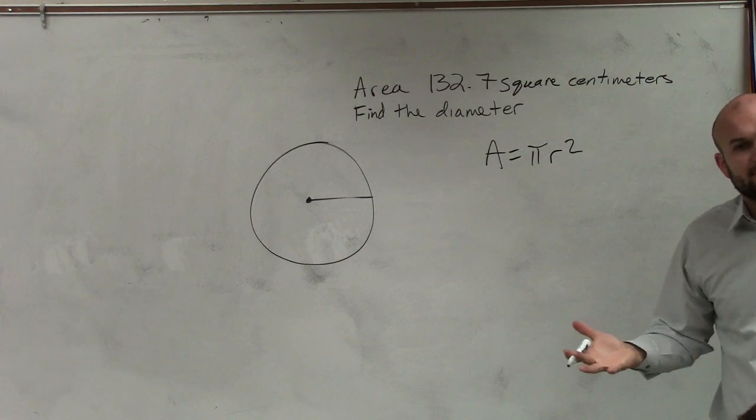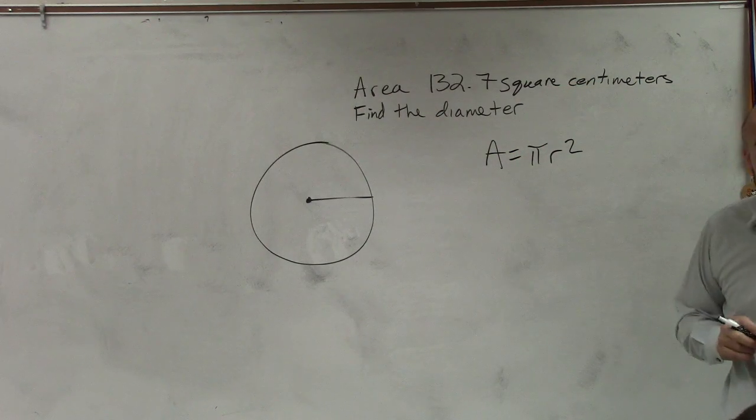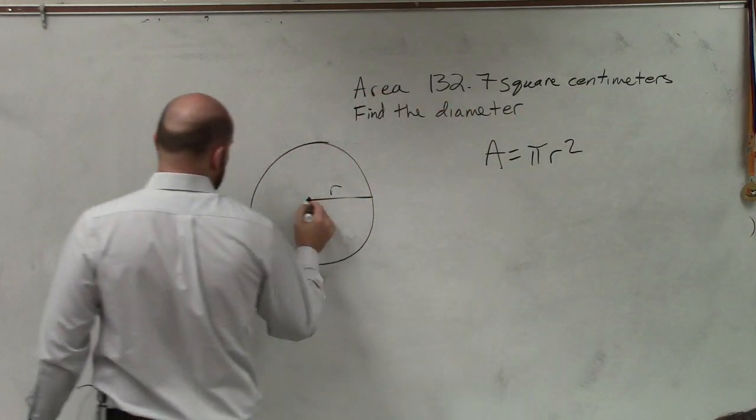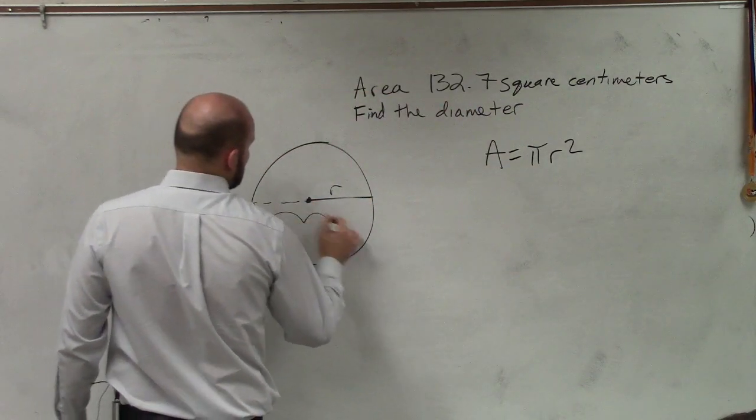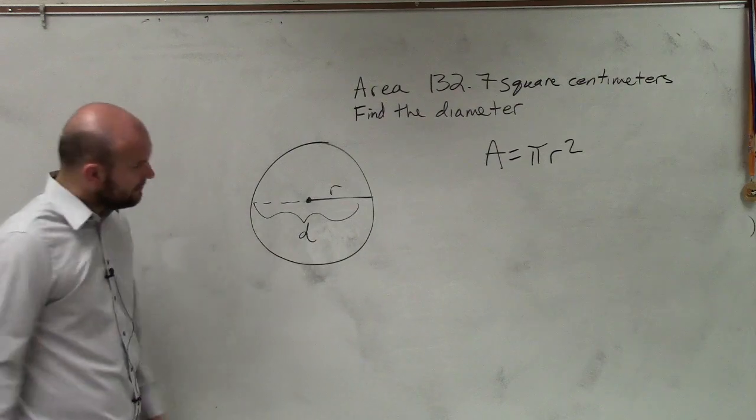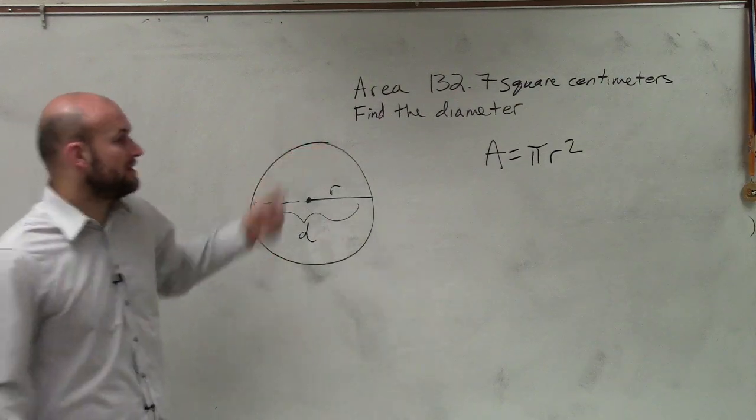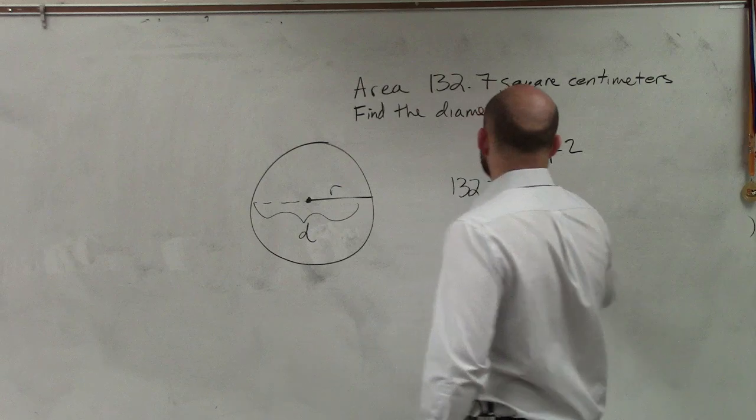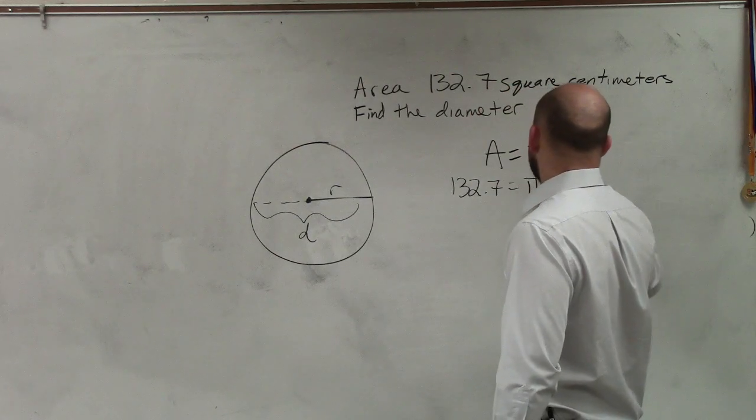Now let's present the information. They're asking us to find the diameter, right? We know that this distance is the radius, and this distance is the diameter. So first of all, we know the area is 132.7 square centimeters equals pi r squared.